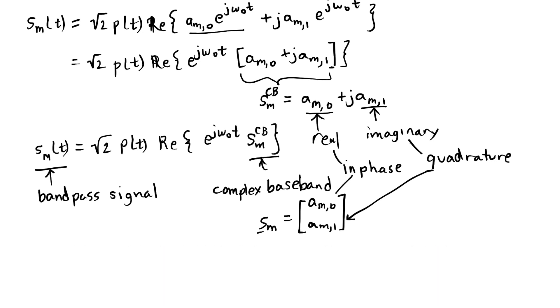This is what they're talking about. They're not talking about anything different, they're just talking about representing this two-dimensional vector s_m in a complex plot rather than in a general generic two-dimensional plot.